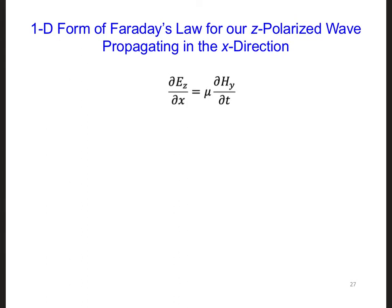The 1D form of Faraday's law for free space is shown here. Now when we include the sigma-sigma-star term, we're going to have dEz/dx is minus sigma-star Hy plus mu dHy/dt.